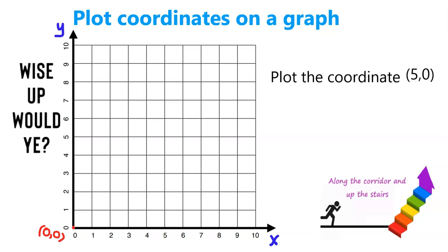Okay, the next coordinate that we've been asked to plot is (5, 0). So looking at (5, 0), we'll just label which part is x and which part is y. So we're going to go along the corridor, along the x-axis, 5: 1, 2, 3, 4, 5. And up the y-axis, but it's 0 on the y-axis, so we don't go anywhere. (5, 0) is on the x-axis. We can label it just there.